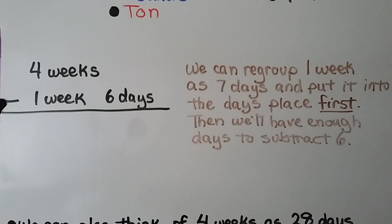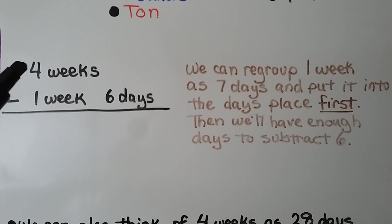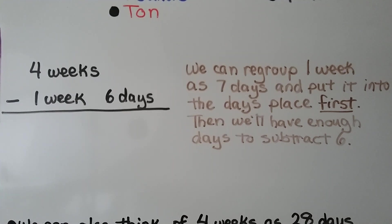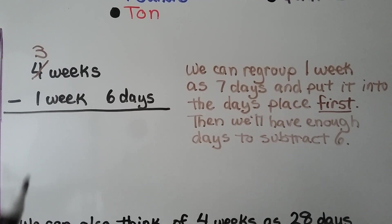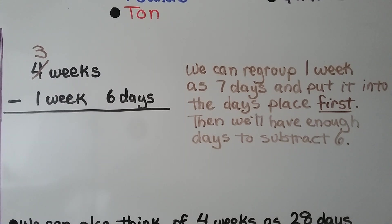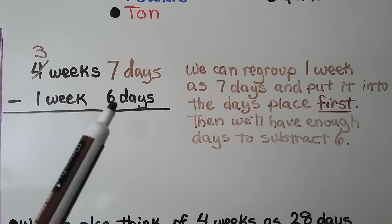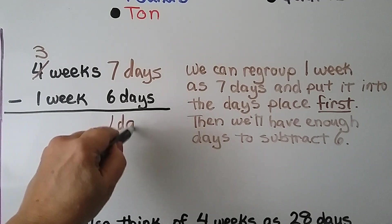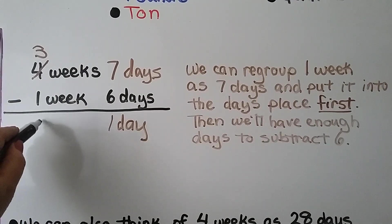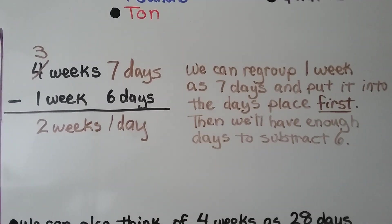The sum was regrouped to make an additional week. Then we have five weeks plus one week is six weeks and one day. Here we have four weeks, and we need to subtract one week six days. We can regroup one week as seven days and put it into the days place first, so four weeks becomes three weeks, and we turn that one week into seven days. We have seven days minus six days — that's one day. Three weeks minus one week is two weeks. We have two weeks and one day.